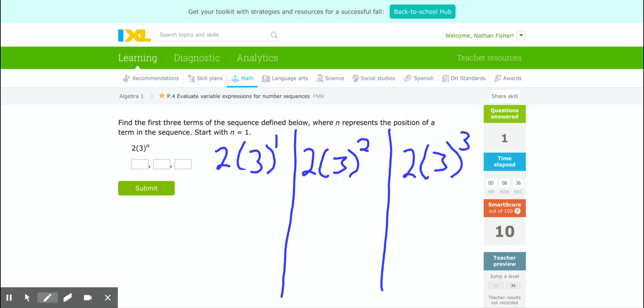So remember, order of operations. Think about PEMDAS. The exponent comes first. So 3 to the power of 1 is still 3 times 2 is going to give me 6. For the second one, 3 squared is 9. And then I have 2 times 9 would give me 18. And then for this one, 3 to the 3rd power, I'm going to even double-check that one, 27. I'm going to have 2 times 27. And that's going to give me 54.